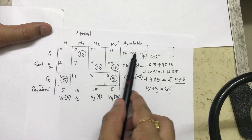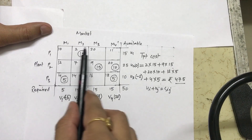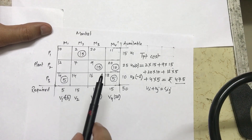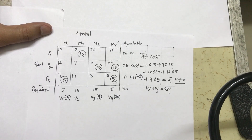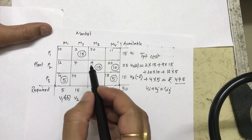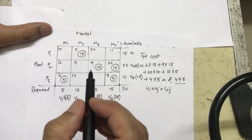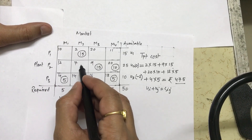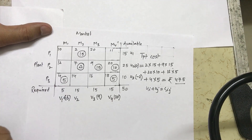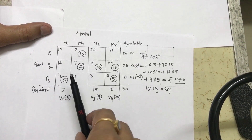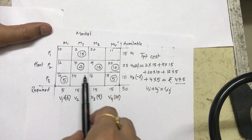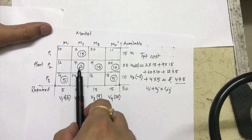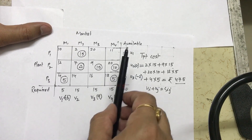This is where degeneracy creates a problem. I don't have any allocated cell that connects to calculate v2 or u1 — both are empty. This problem appears because the number of allocations is less than row plus column minus 1. To resolve this, I must allocate a minimum value — known as Delta — to one of the remaining empty cells. The first suggestion is to place Delta in the cell with the minimum cost, which is 7 here.